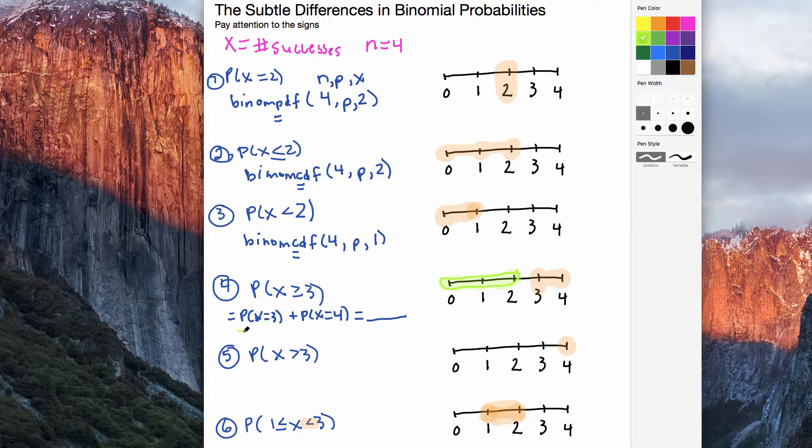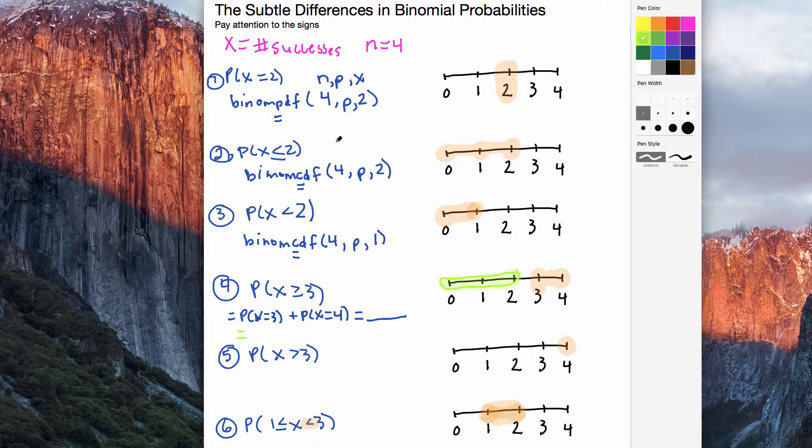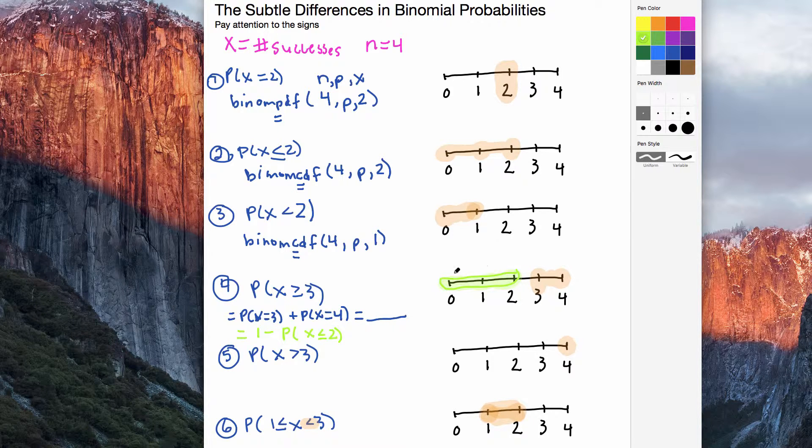But if I want to find the probability of x greater than or equal to 3, I can use a complement rule and say, what do I need to do instead? I need to take the whole, so take 100%, and subtract what I don't want. I do not want anything that is 2 or less. The probability that x is less than or equal to 2.